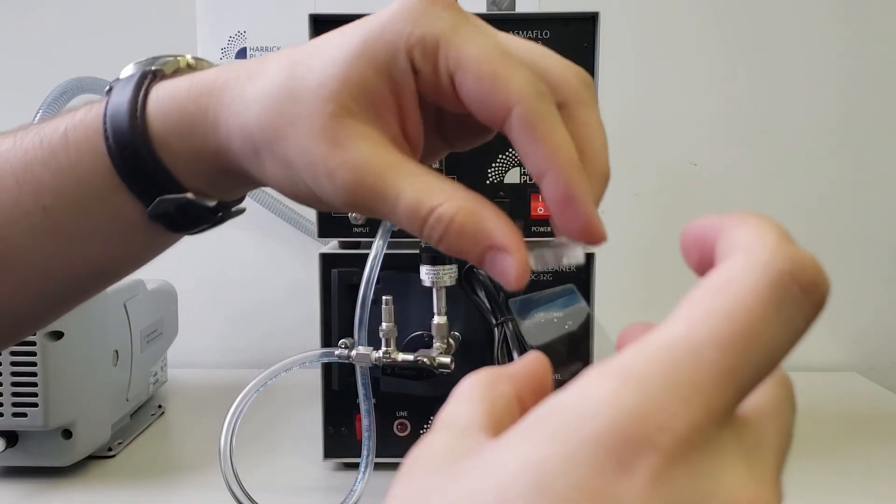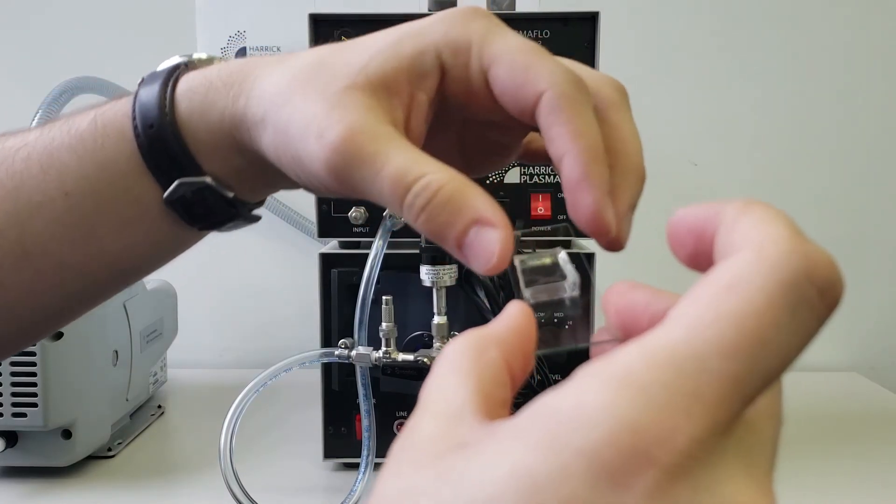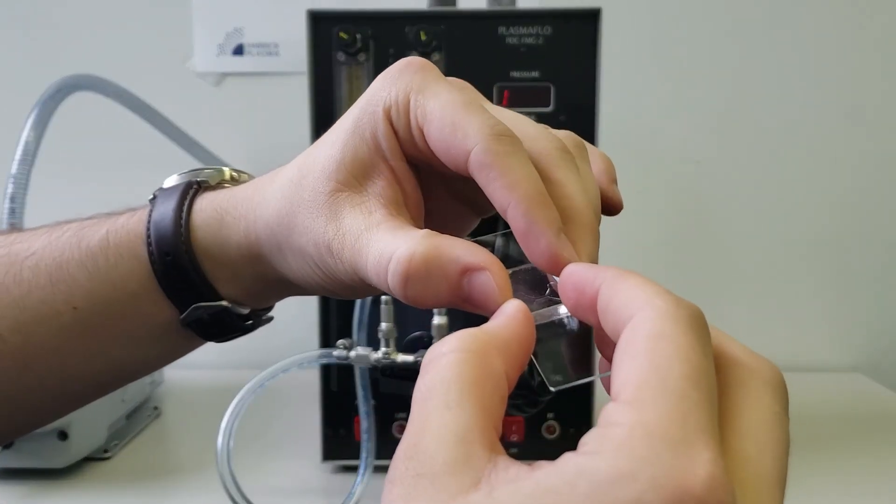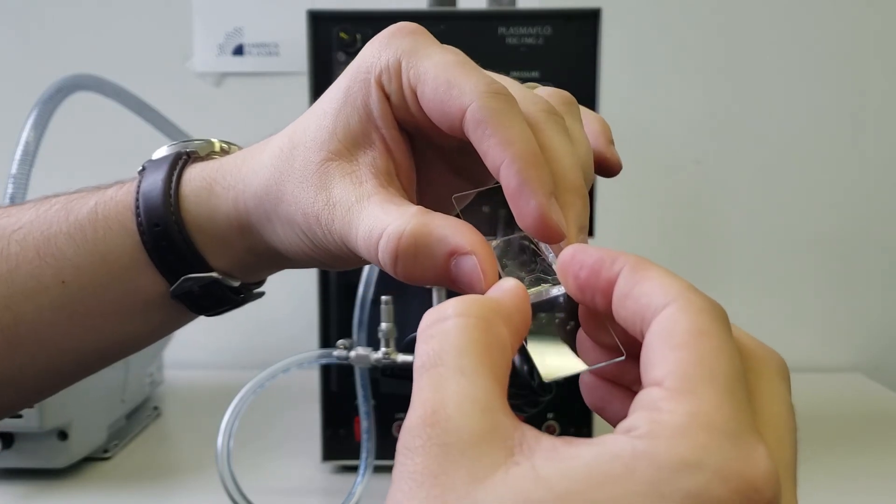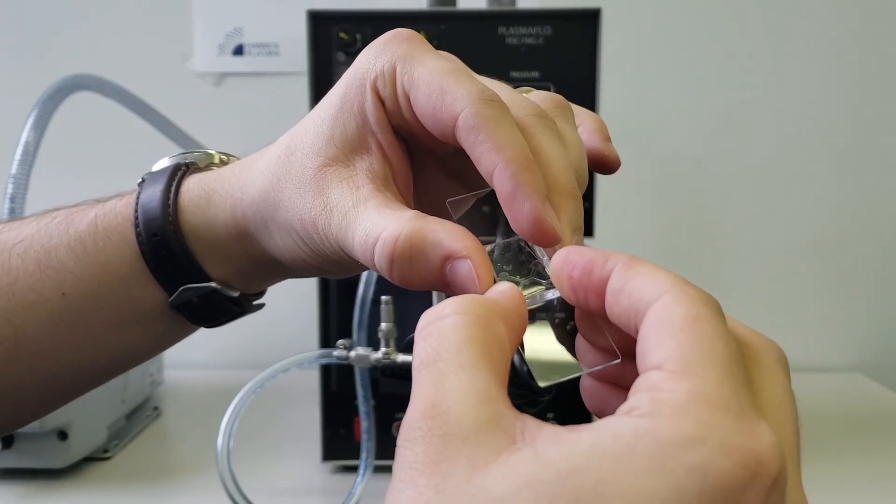Immediately following plasma treatment, press and hold the PDMS and glass components together for 30 seconds. Be careful not to pull the components apart to adjust the alignment, as this will disrupt bond formation.